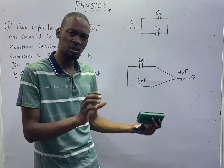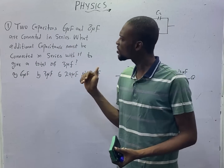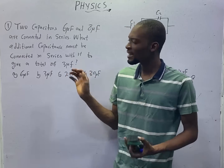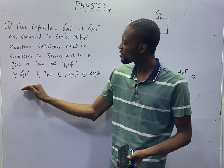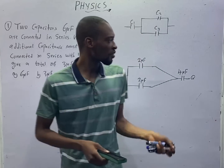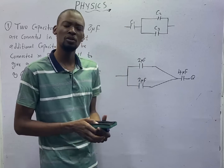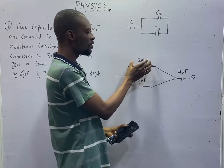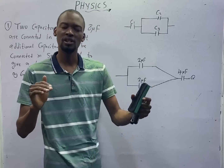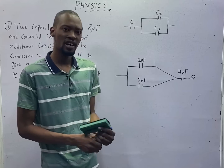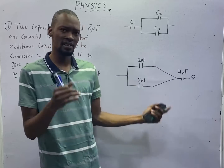When you are given capacitors to arrange, what you should look at is whether they are all in the same unit. In this question, we are given capacitors in microfarad and the options are in microfarad. So long they are in the same unit, you are good to start. But you don't find equivalent capacitance or total capacitance when they are in different units.